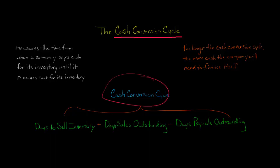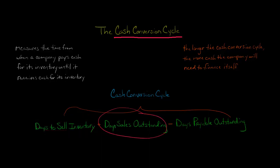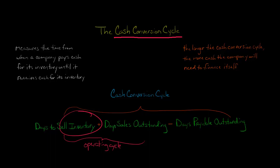To get the cash conversion cycle, you begin with the number of days it takes a company to sell its inventory. Then you add to that the days sales outstanding, which is the number of days it takes for a company to collect its accounts receivable. These two together make up the operating cycle — how many days it takes a company not only to sell the inventory, but then to collect the cash from the outstanding accounts receivable, assuming customers bought the inventory on credit.